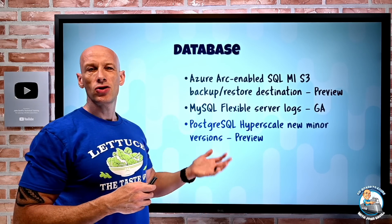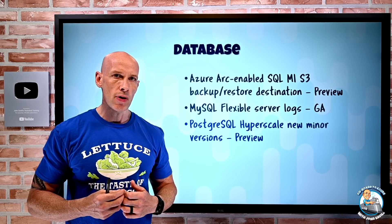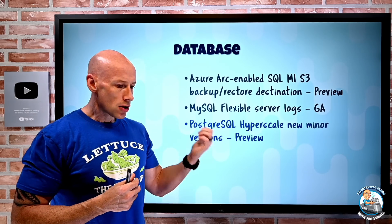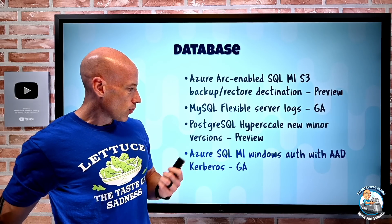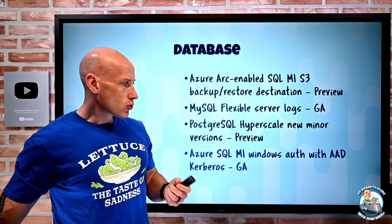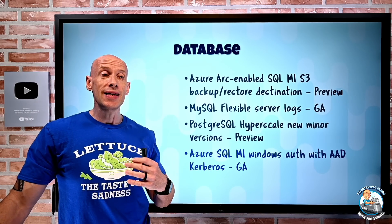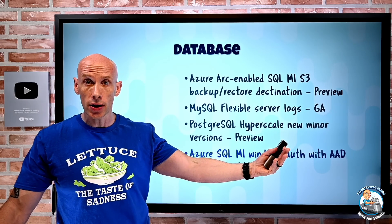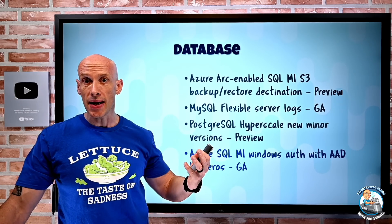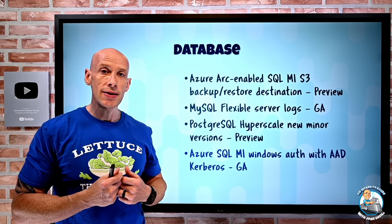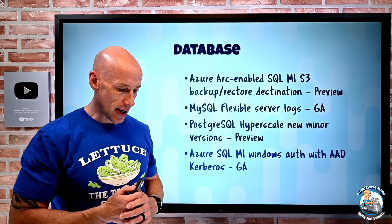PostgreSQL Hyperscale now has new minor versions. Hyperscale is built on the Citus extension to provide distributed tables, sharding data across many instances for great scale and performance. The new minor versions are Postgres 11.17, 12.12, 13.8, and 14.5. Azure SQL Managed Instance running in Azure now has Windows authentication with Azure AD Kerberos. Azure AD can now provide Kerberos authentication and create tokens for identities synchronized from Active Directory, so Azure SQL MI can use Windows authentication via the Azure AD Kerberos service.